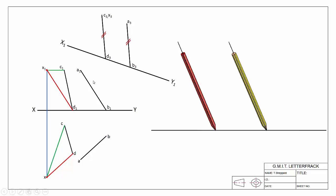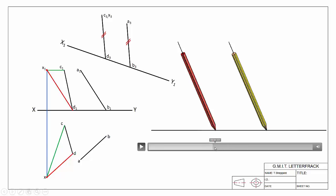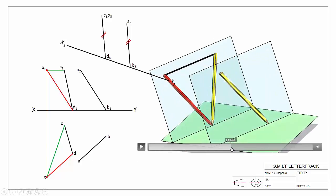So that's how we know we've found the view where the two skew lines will appear parallel. Next, we want to find the vertical and horizontal traces for the plane. Let's go back to our 3D view. The horizontal trace is where our plane meets the ground.